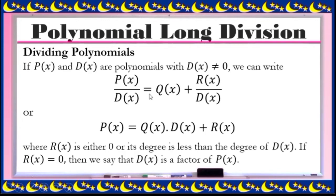p(x) over d(x) is equal to q(x), where q means the quotient, plus r(x) — r means the remainder — over d(x). Or we can rewrite it as: p(x) equals q(x) times d(x) plus r(x), where r(x) is either 0 or its degree is less than the degree of d(x). The degree refers to the highest exponent of the given polynomial.